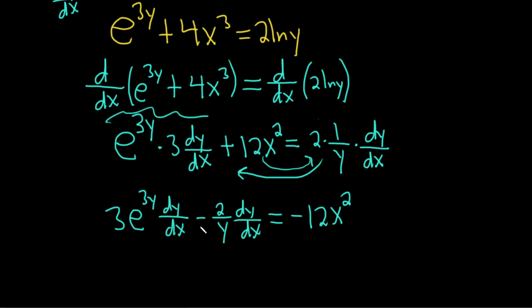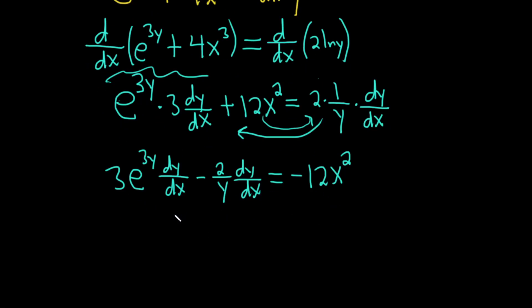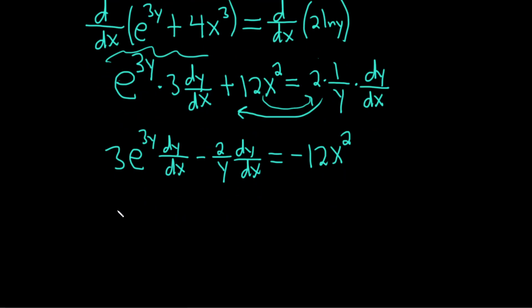Now that we have all of the terms that have a dy/dx on one side, we can factor out dy/dx. So we have dy/dx, parentheses, 3e to the 3y minus 2 over y. And that's equal to negative 12x squared.